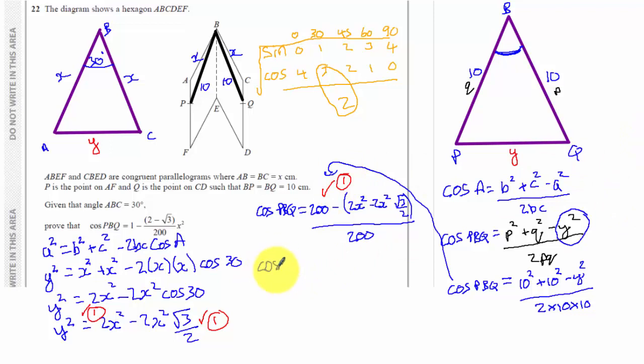This should, hopefully, tidy up quite nicely. So let's have a look. I'm going to separate this into two fractions so I can see how I can get my 1. So I'm going to have 200 over 200 minus 2X squared minus 2X squared times root 3 over 2. And I've got to start tidying this up a little bit. So I'm going to have cos PBQ. 200 over 200 is 1. So I've got the 1 I need. Minus 2X squared minus 2X squared lots of root 3 over 2.